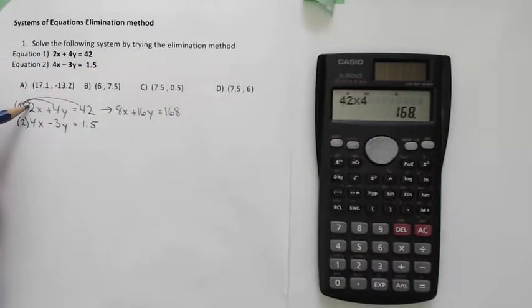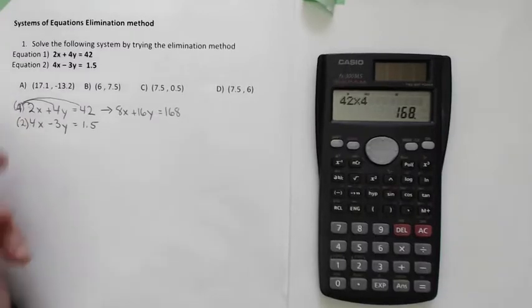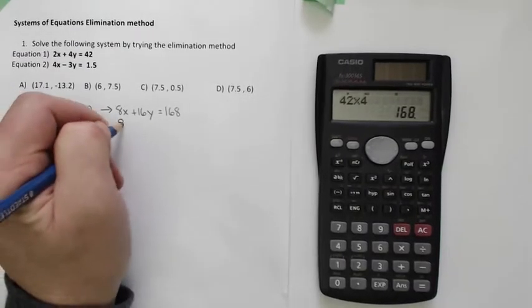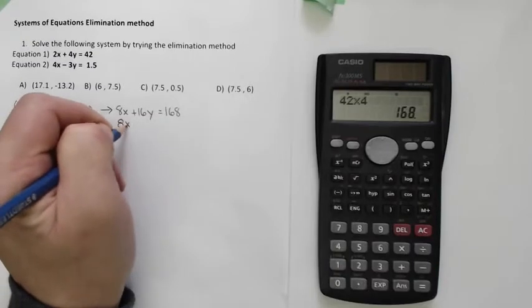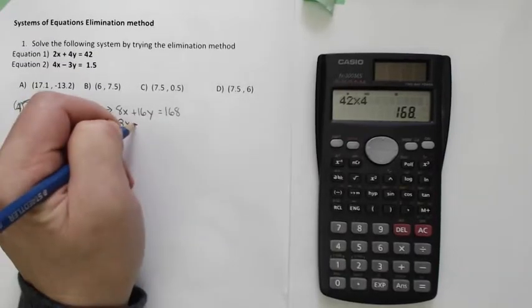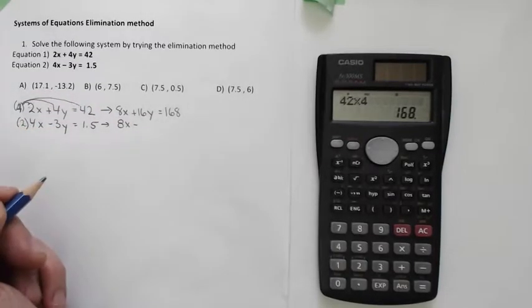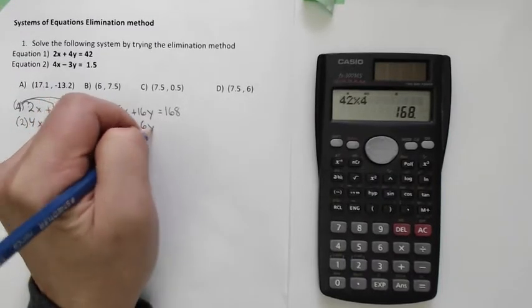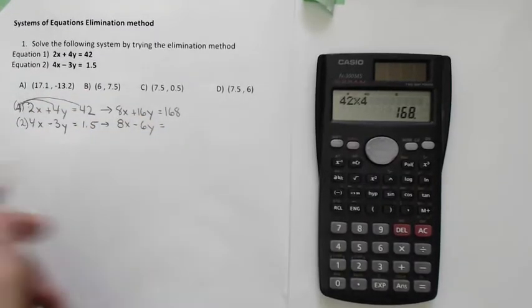So I multiplied the top one by 4 because there's a 4 in front of the x down here. Now I'm going to multiply the bottom one by 2 because there's a 2 in front of the x up there. And that's going to give me 8x minus 2 times 3 is 6. And that's going to be equal to 3.